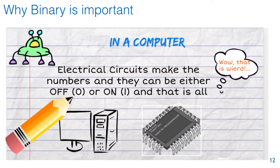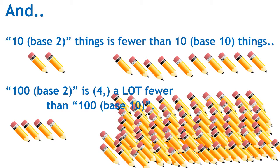And furthermore, I'd like you to try and remember that 10 base two things, the crayons here, is fewer than 10 base ten things. And 100 base two, which is actually four in the decimal system, is a lot fewer than a hundred base ten.